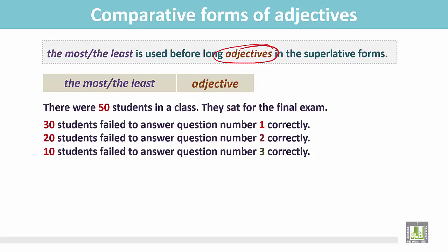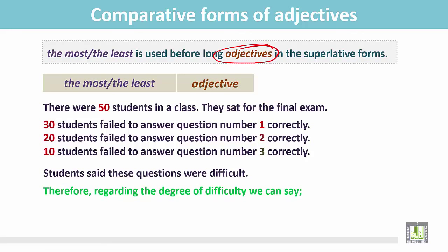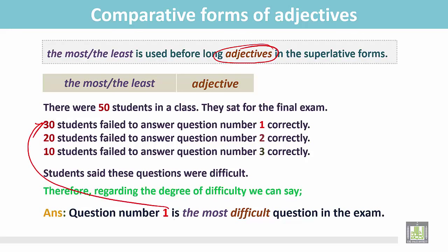In this situation we can compare the most difficult question or the less difficult question according to the number of students answered the questions. See the explanation. Students said these questions were difficult. Therefore, regarding the degree of difficulty, we can say question number 1 is the most difficult question in the exam because 30 students failed to answer this question among 50 students.